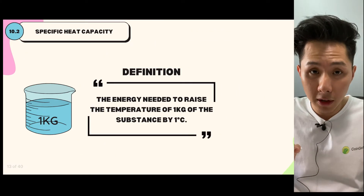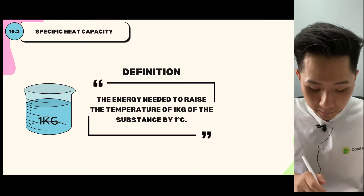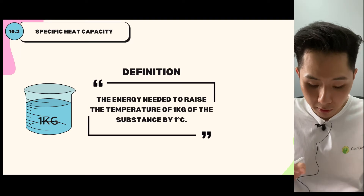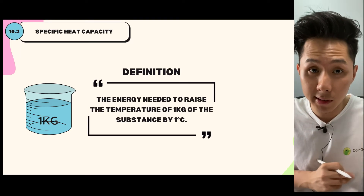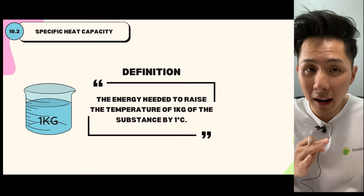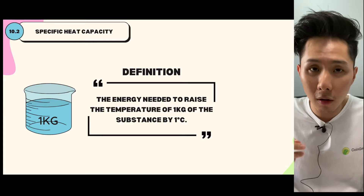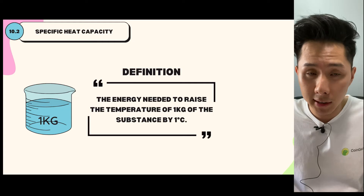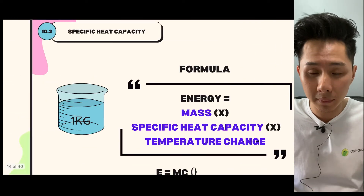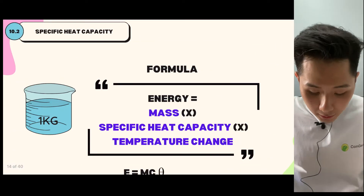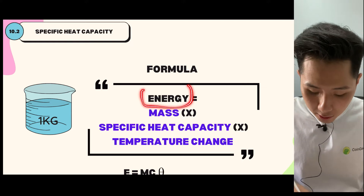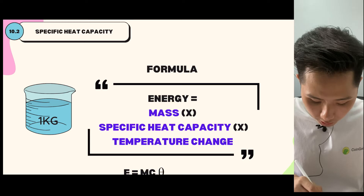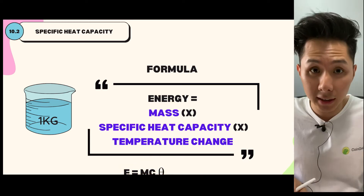Let's look into the formal definition of specific heat capacity: the energy needed to raise the temperature of one kilogram of the substance by one degree Celsius. Do take note that every liquid, metal, or gas out there is going to have a different specific heat capacity, meaning they heat up differently. There is a formula relating energy, mass, specific heat capacity, and temperature change, which is E = mcΔθ.